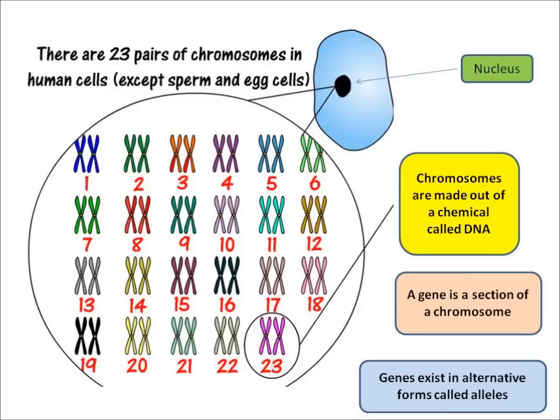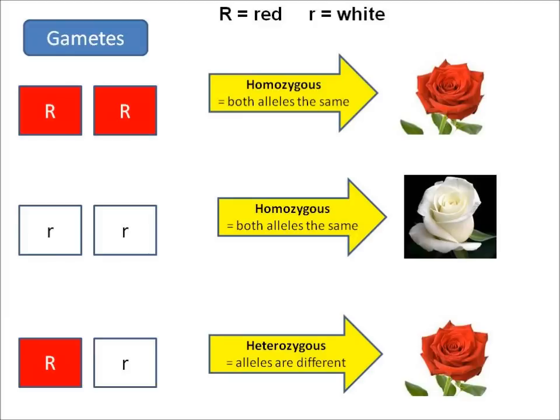Each form I then call an allele — A-L-L-E-L-E — allele. To understand the laws of genetic inheritance, let's look at this made-up example to do with the color of roses.